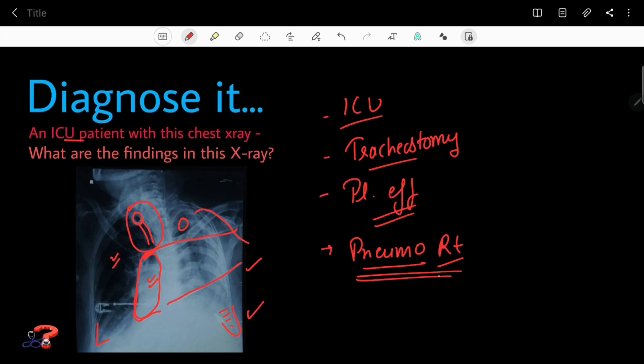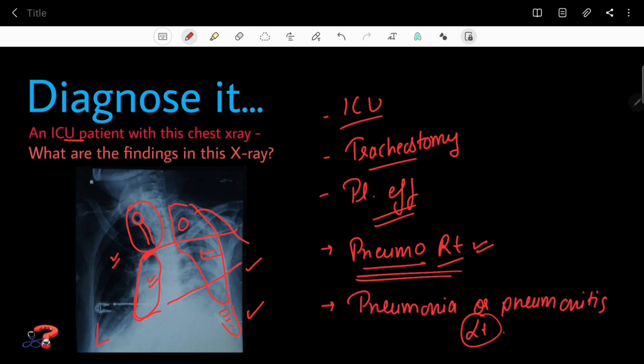That confirms the diagnosis of right-sided pneumothorax. Regarding the left lung, you can clearly see there is some haziness over the left lung, and that haziness may be due to pneumonia or pneumonitis.